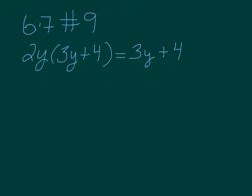Alright, we're asked to solve this equation by factoring. First we need to get it ready for that. We're going to distribute the 2y to the 3y and the 4. So it's going to be 6y squared plus 8y equals 3y plus 4.